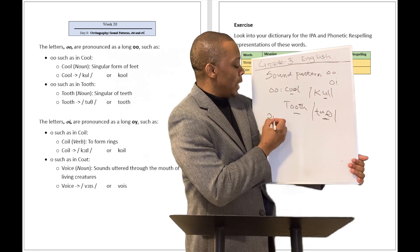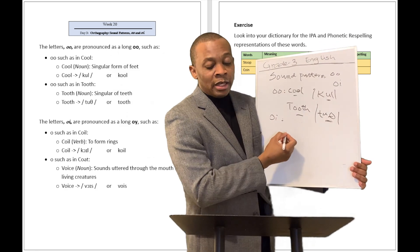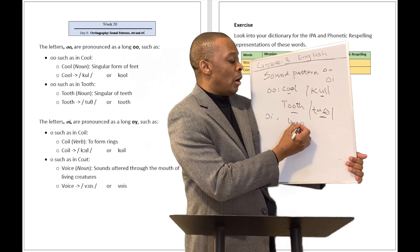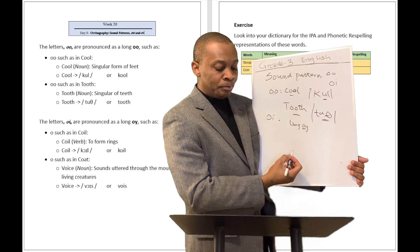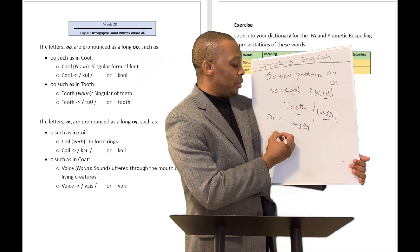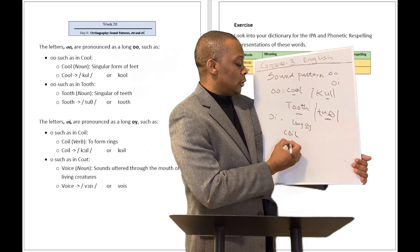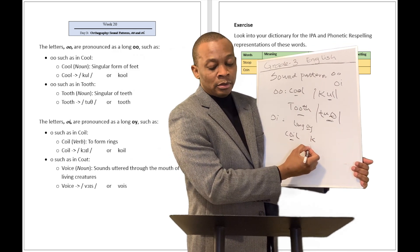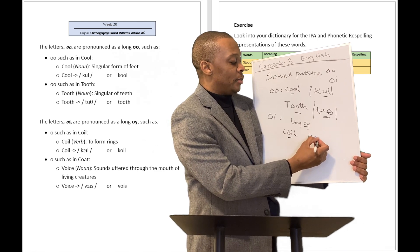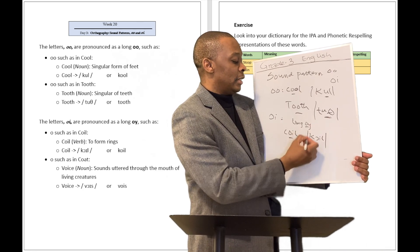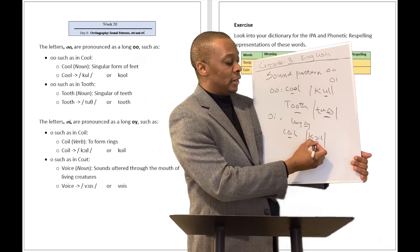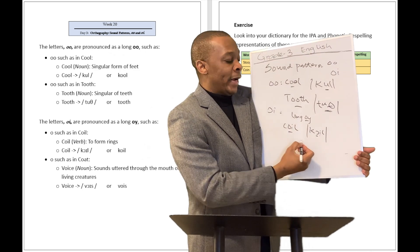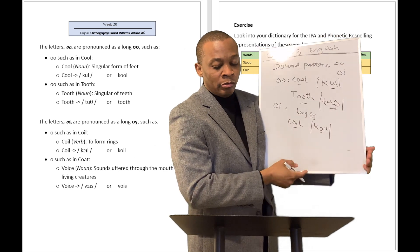What about the letters OI? So when you have OI put together like this, they have the long OI sound. An example is going to be the word 'coil.' So 'coil' is going to be like the OI sound, which I believe in the IPA is going to look like that. When you put it together, it's going to be OI — 'coil.'